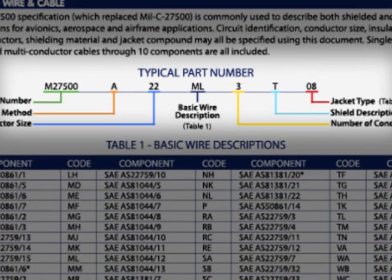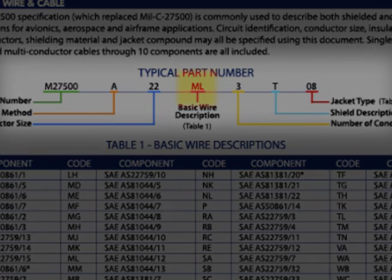You can tell a lot about these cables from their part numbers. Each begins with the spec M27500, followed by a code for its identification method and the number reflecting its conductor size. The component cables used in the construction of M27500 parts are identified by a one- or two-letter code representing their SAE component type.